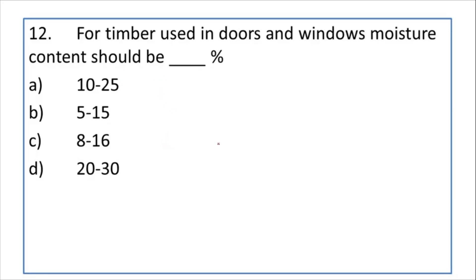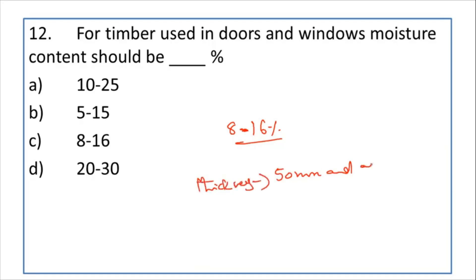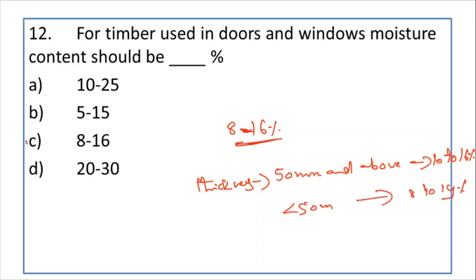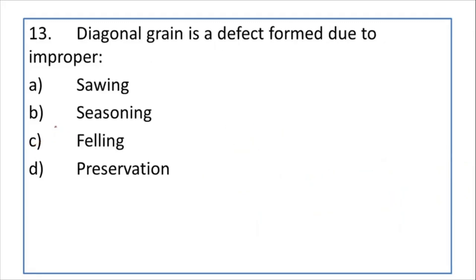For timber used in doors and windows, the moisture content should be 8 to 16 percent. If the thickness of the member is 50 mm and above, moisture content should be 10 to 16 percent. If it is less than 50 mm, it should be 8 to 14 percent. Overall, the moisture content should be 8 to 16 percent.